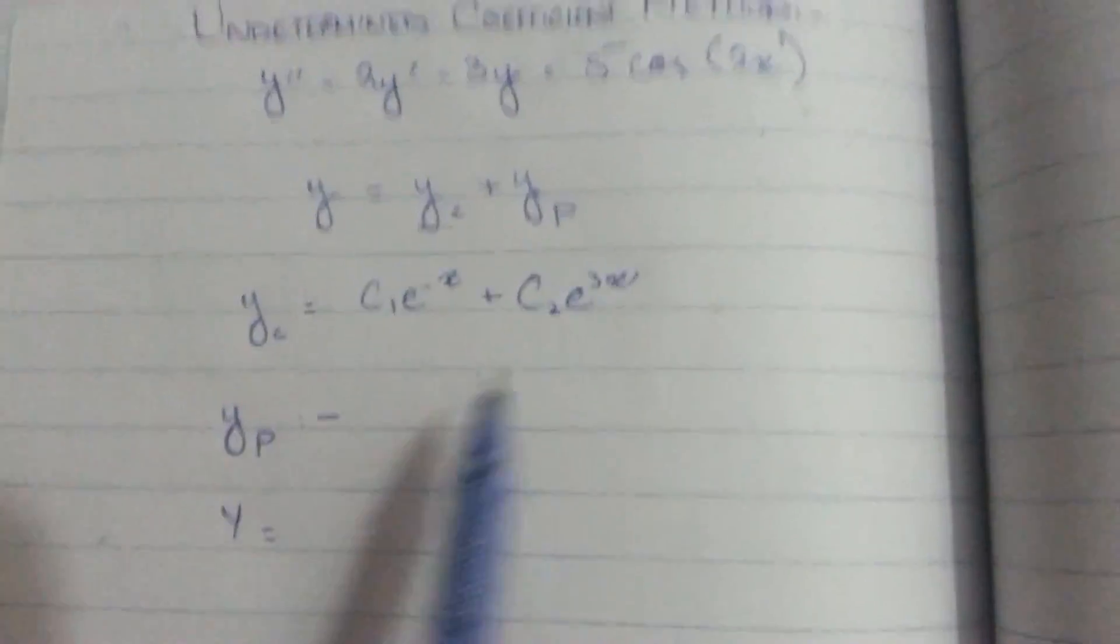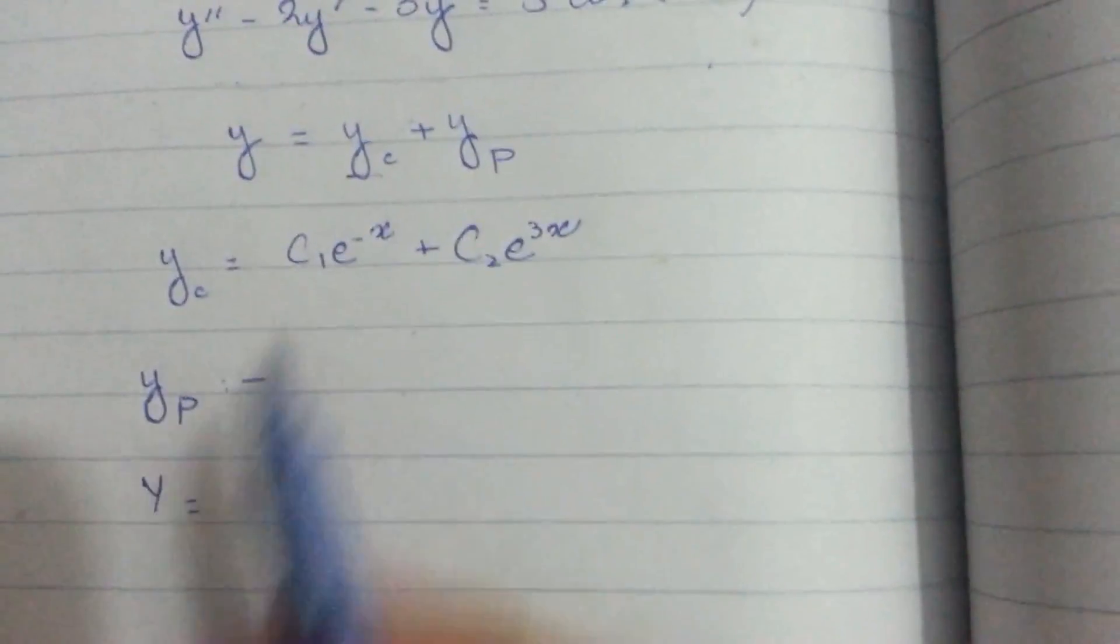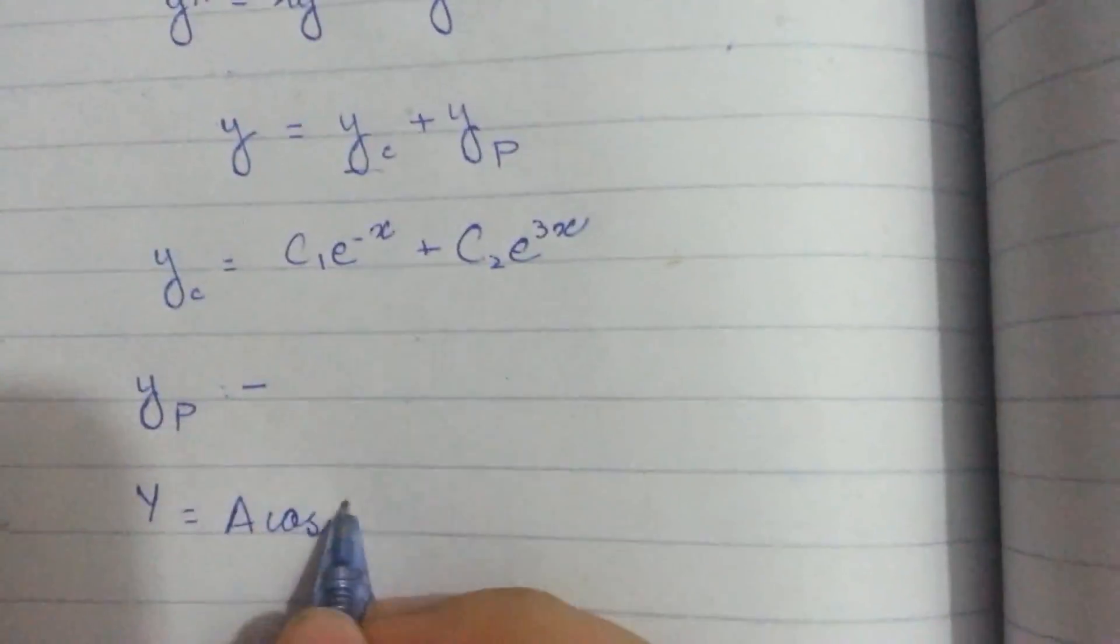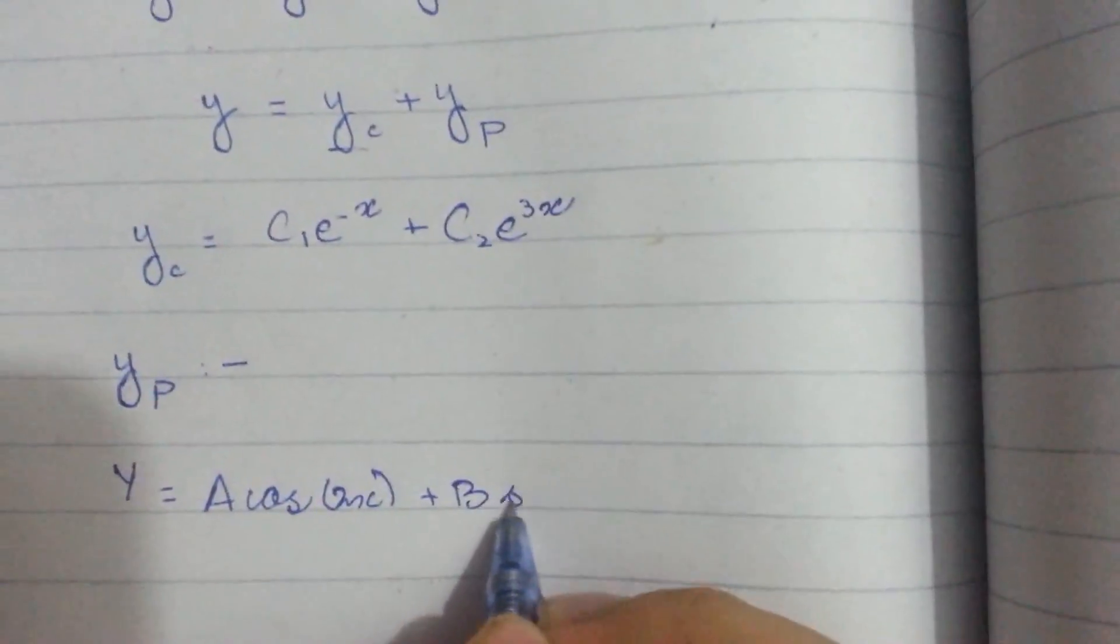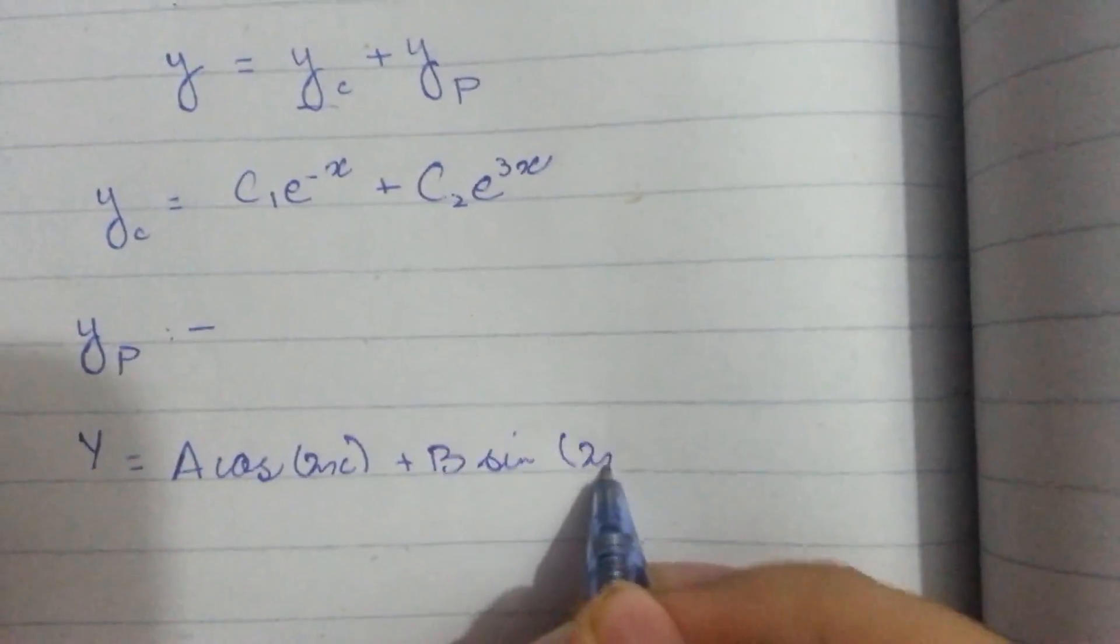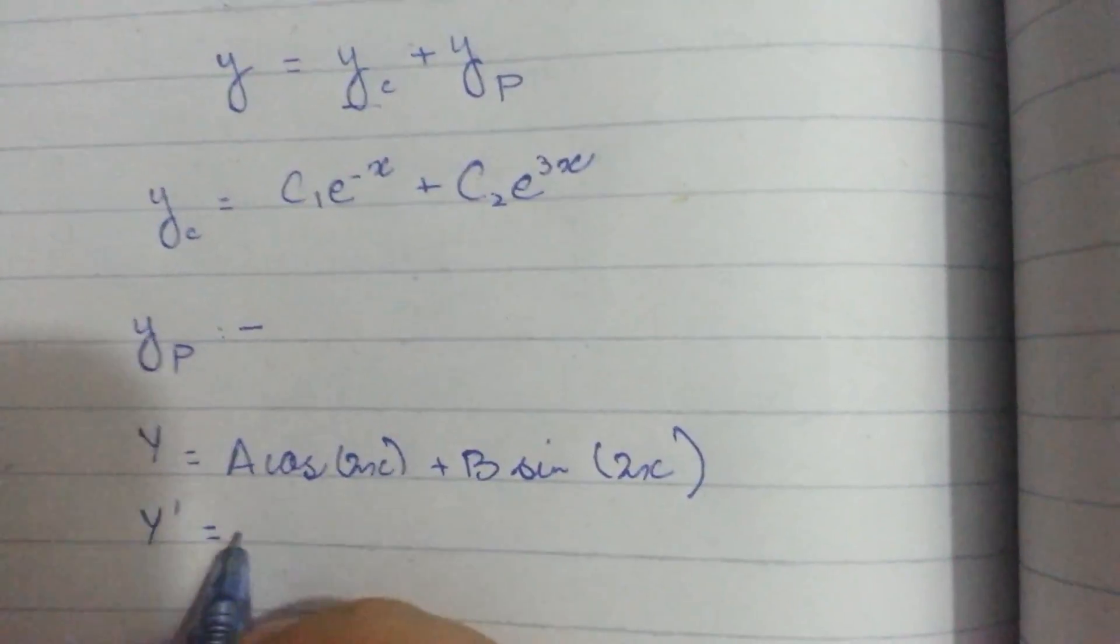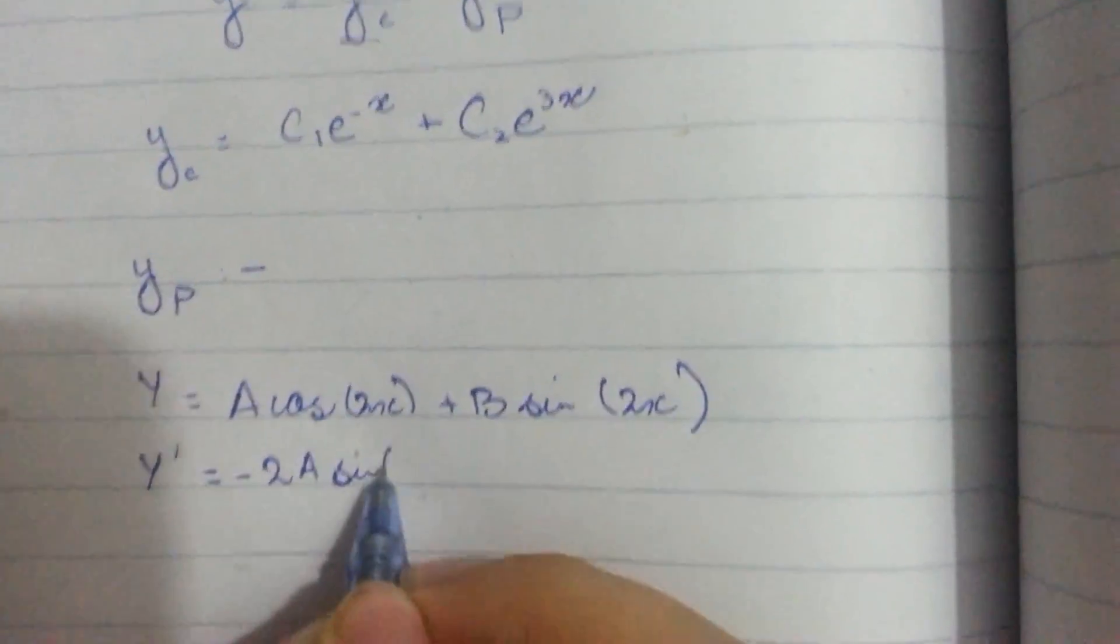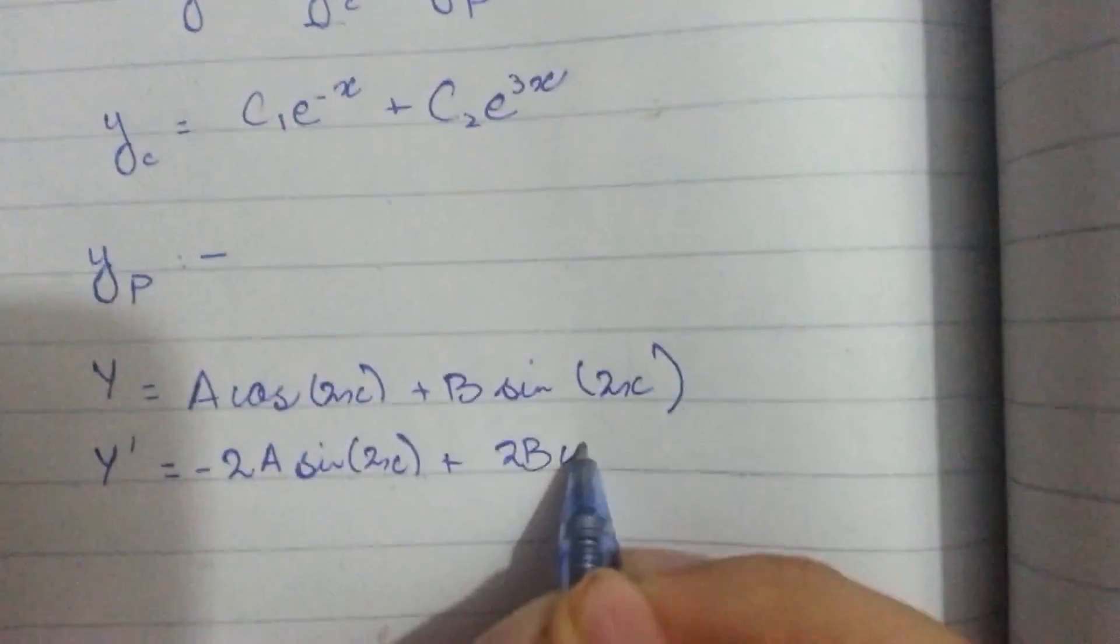So the y of this equation is 5 cos 2x. We will put this in a formula and it will be A cos 2x plus B sine 2x. Now we will take the first derivative of this and that will be minus 2A sine 2x plus 2B cos 2x.